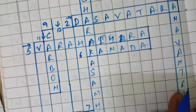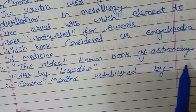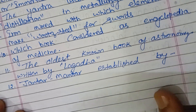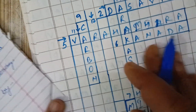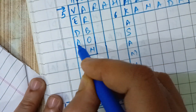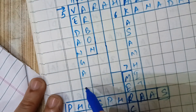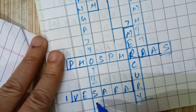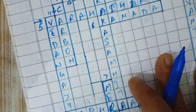Eleventh downward: what is the oldest known book of astronomy written by Lagad? The answer is Vedang Jyotish — V-E-D-A-N-G J-Y-O-T-I-S-H-A.